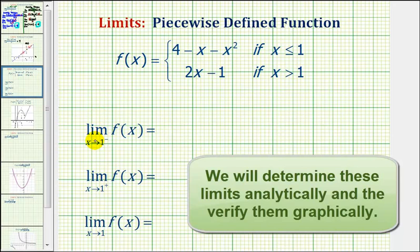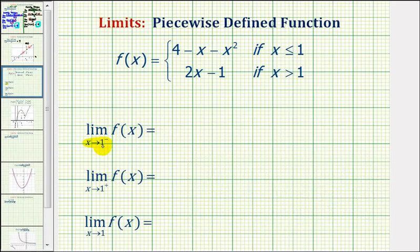If x is approaching positive one from the left, or the negative side, we're approaching one using values that are less than positive one, which means the values of x would be in the interval where x is less than or equal to positive one. So we can determine this one-sided limit by using the function rule f of x equals four minus x minus x squared by substituting one for x.